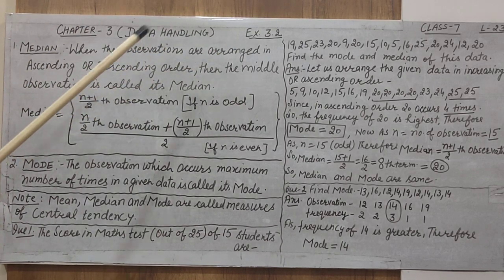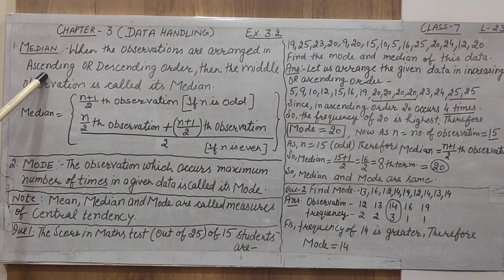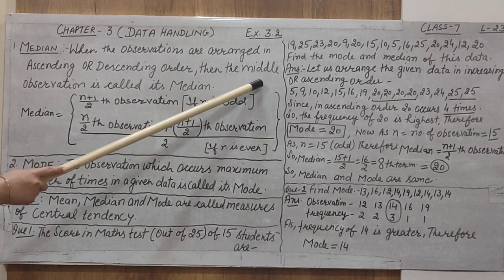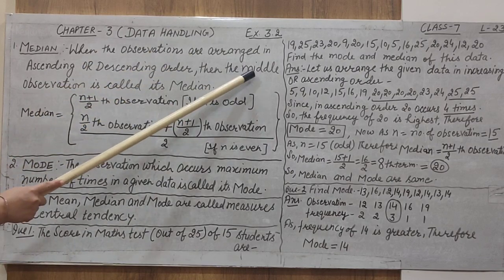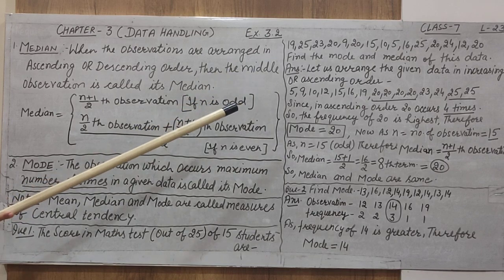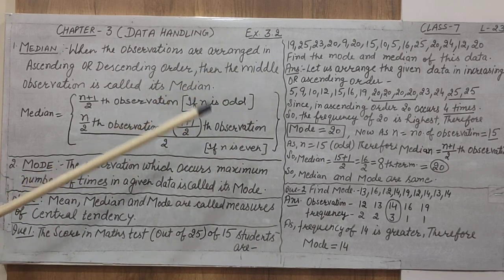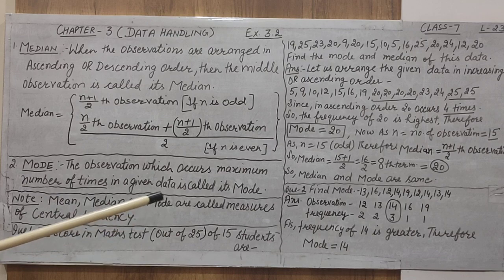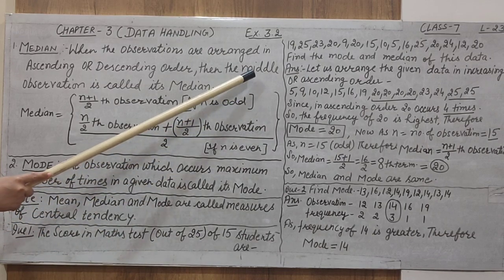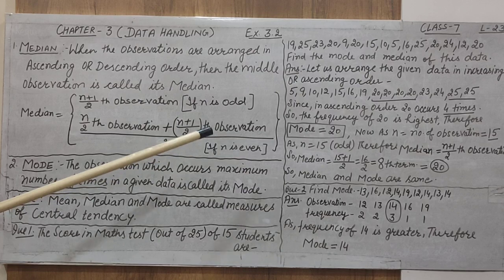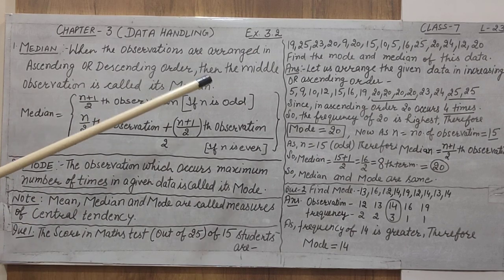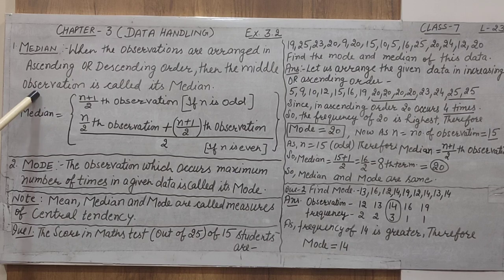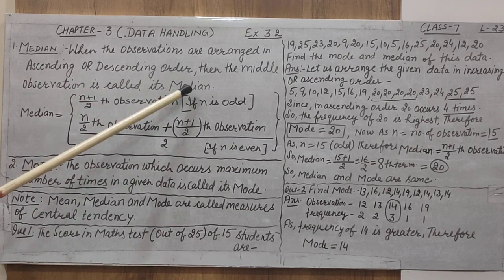When the observations are arranged in ascending order, then the middle observation — middle means you have to count the total observations, that is the number of observations — depending upon the number of observations, whichever comes at the center is called the median.